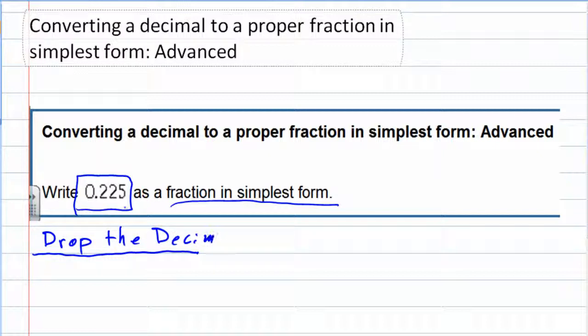Drop the decimal that will give us our numerator and then for the denominator, for the bottom, we're going to use the last digit's place value.